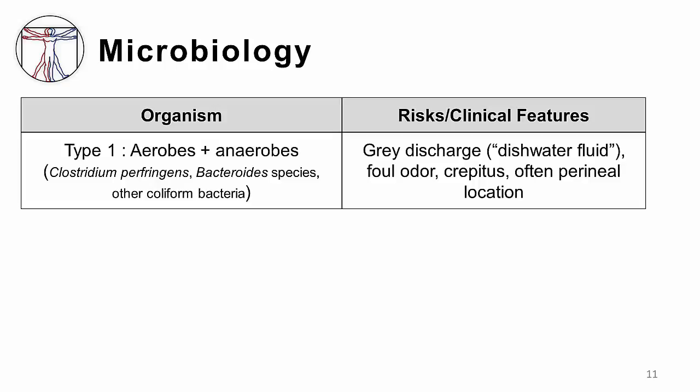The most common microbiologic cause of necrotizing disease is polymicrobial infection, meaning more than one causative organism. As mentioned previously, this is also referred to as type 1 necrotizing disease. A combination of aerobes and anaerobes from the gastrointestinal or genitourinary tract, or sometimes oral flora, may be found. This includes Clostridium, Bacteroides, Klebsiella, and other coliform species. Anaerobic metabolism produces carbon dioxide gas under the skin surface, which may lead to the finding of crepitus.